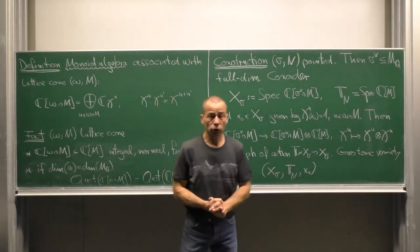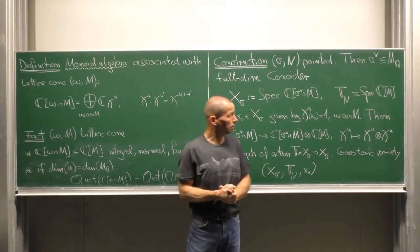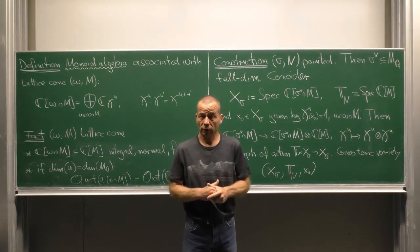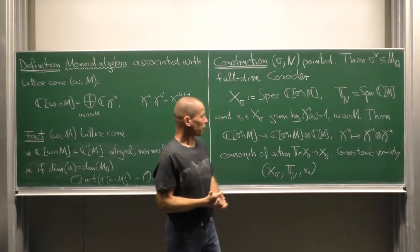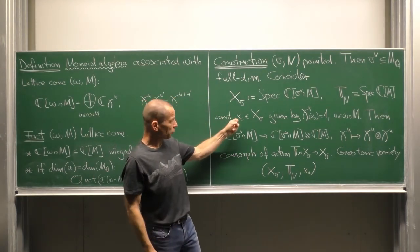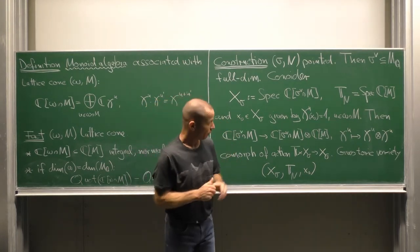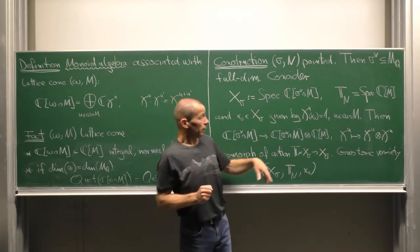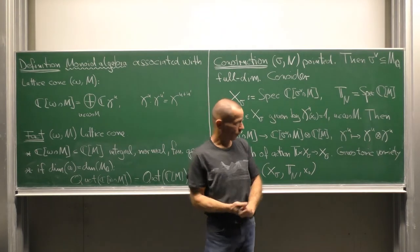Moreover, as a spectrum of the Laurent polynomial algebra C[M], we obtain the torus T_N, which we already know. And we have a base point x_0 in X_sigma, this is a point defined by the property that all the chi^u evaluate to 1 on this point.